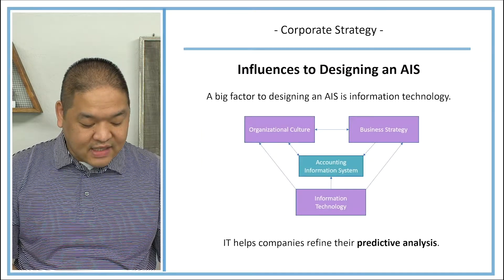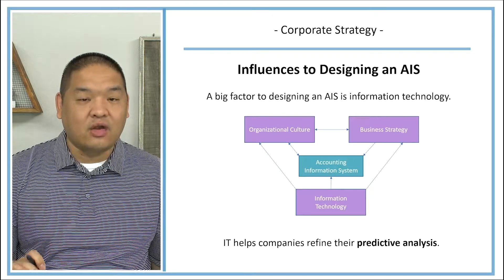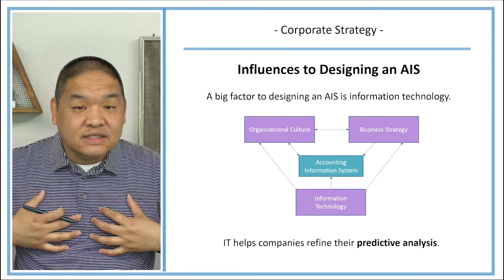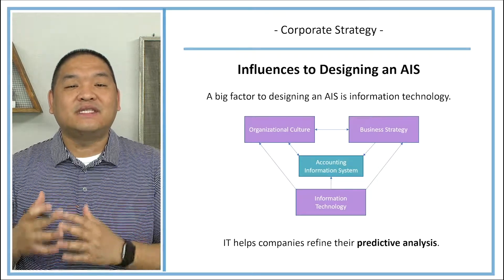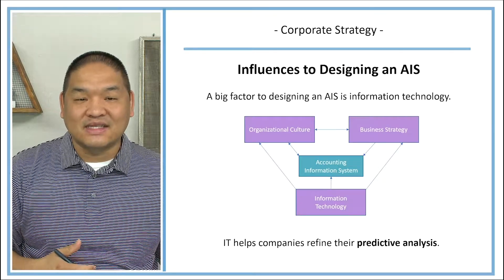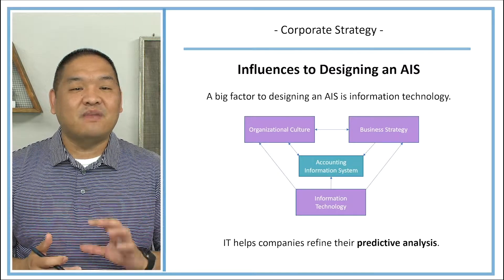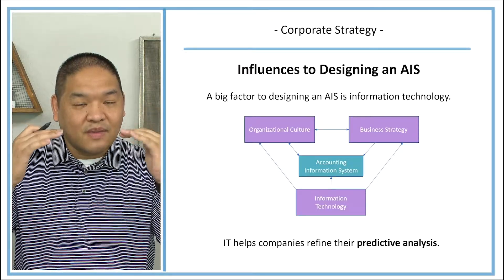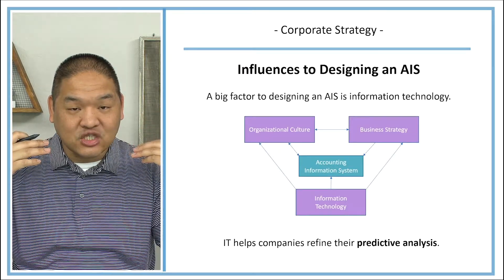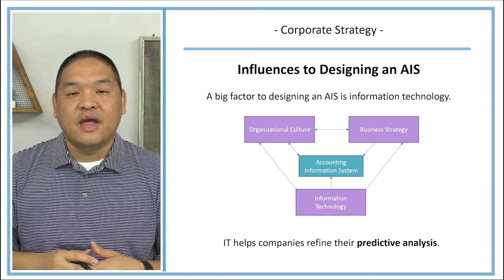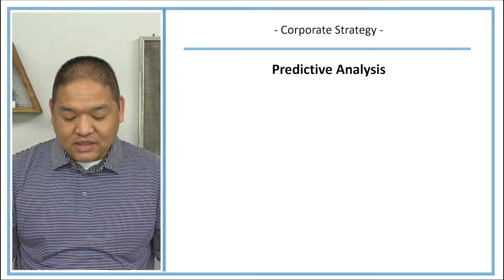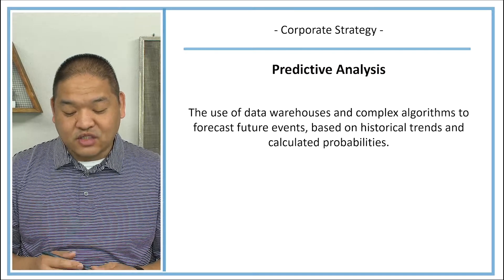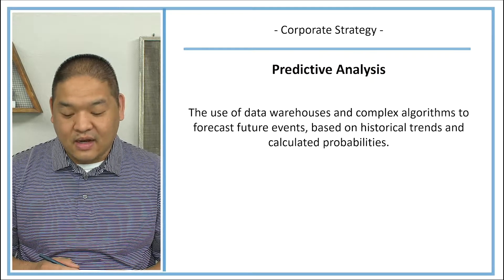A big factor in designing an AIS is information technology. IT has grown, become more efficient, and has done a lot for accountants and managers through something called predictive analysis. Predictive analysis is so important in business because it allows us to forecast what might happen in the future. With more — and better — information, we can pivot sooner than competitors. It is the use of data warehouses and complex algorithms to forecast future events based on historical trends and calculated probabilities.